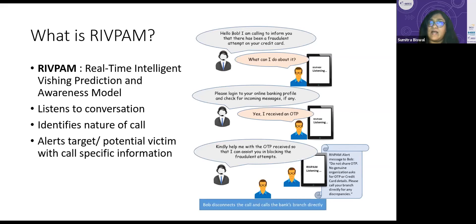Bob's conscience is awakened and he may take action by ending the call and calling the bank directly to check if such kind of facility is available with them. Here, as we understand, RIVPAM is more like a guide to the target which can help the target with alerts and call-specific information.